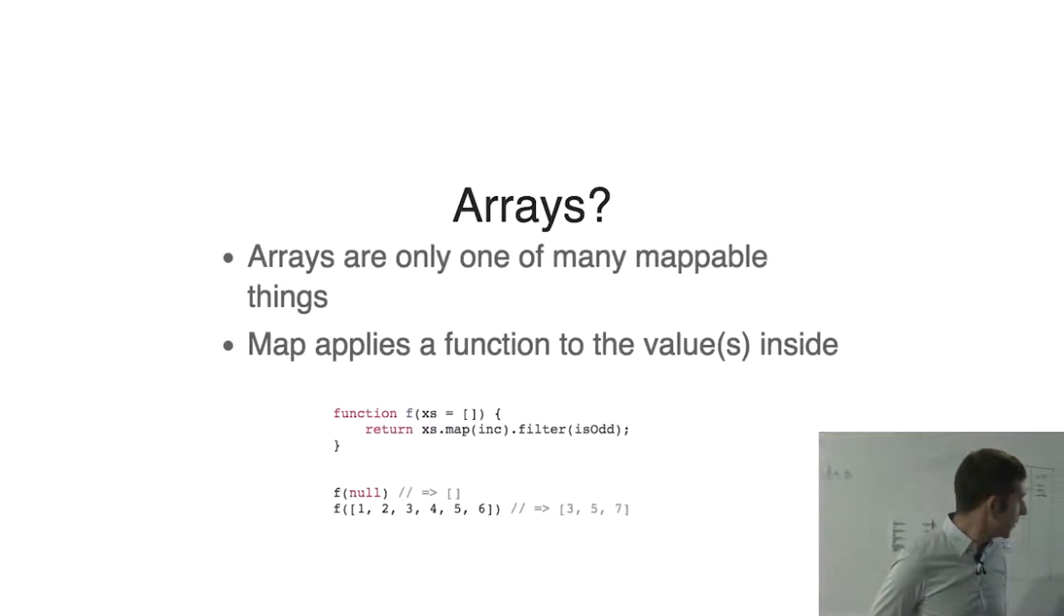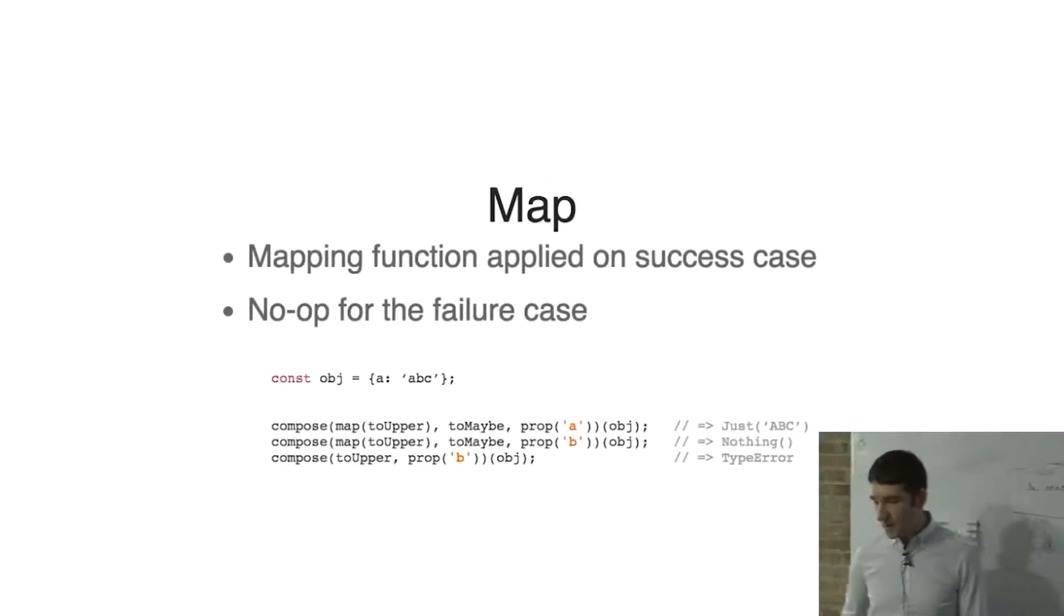And as you can see, you apply the function. If you apply the function and the thing is there, the elements in the array get incremented. So maybe types are exactly the same. If you've got a just and you map a function over, the function gets applied. Otherwise, nothing happens. You can see there what happens if you don't have this type. You just get a type error again at run time and chances are in production.